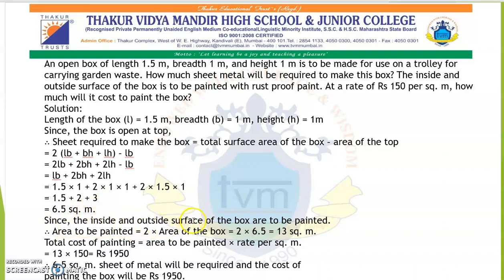Since the inside and outside surfaces of the box are to be painted, the area to be painted = 2 × 6.5 = 13 m². Total cost of painting = area × rate per m² = 13 × 150 = ₹1950. Therefore, 6.5 m² sheet of metal is required and the cost of painting is ₹1950.